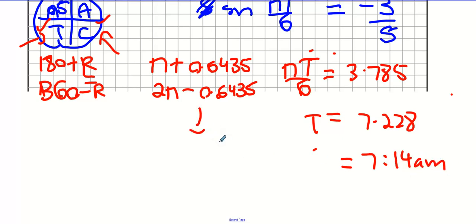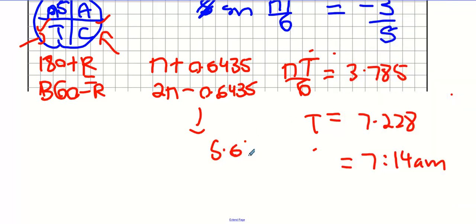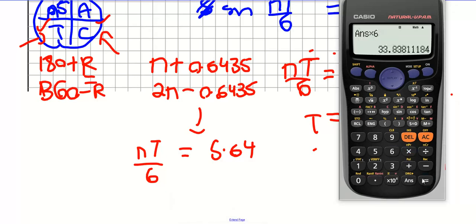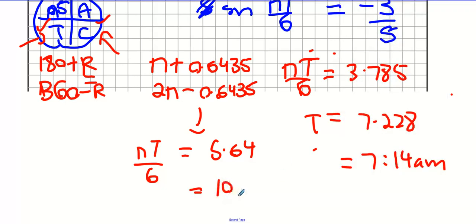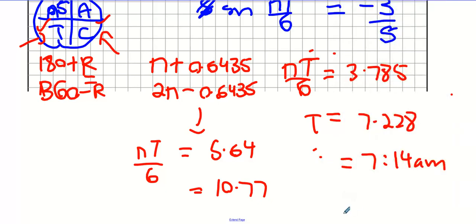I'm going to do the same procedure for the second answer. Where I'm going to do 2pi minus 0.6435. And I get this number here. So 5.64 if you want. It's very close to pi t over 6. I'm going to multiply it by 6 and divide it by pi. So multiply it by 6, divide it by pi. And I get 10.77. And then if I change this into hours and minutes, I get 10 hours and 46 minutes. So the second time will be 10:46am.